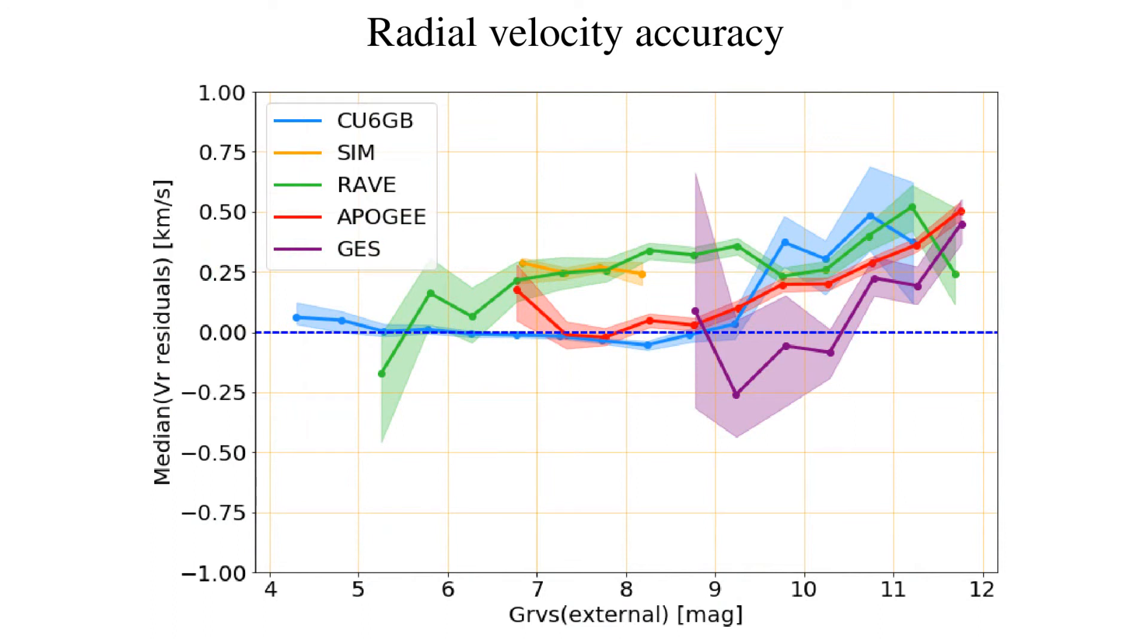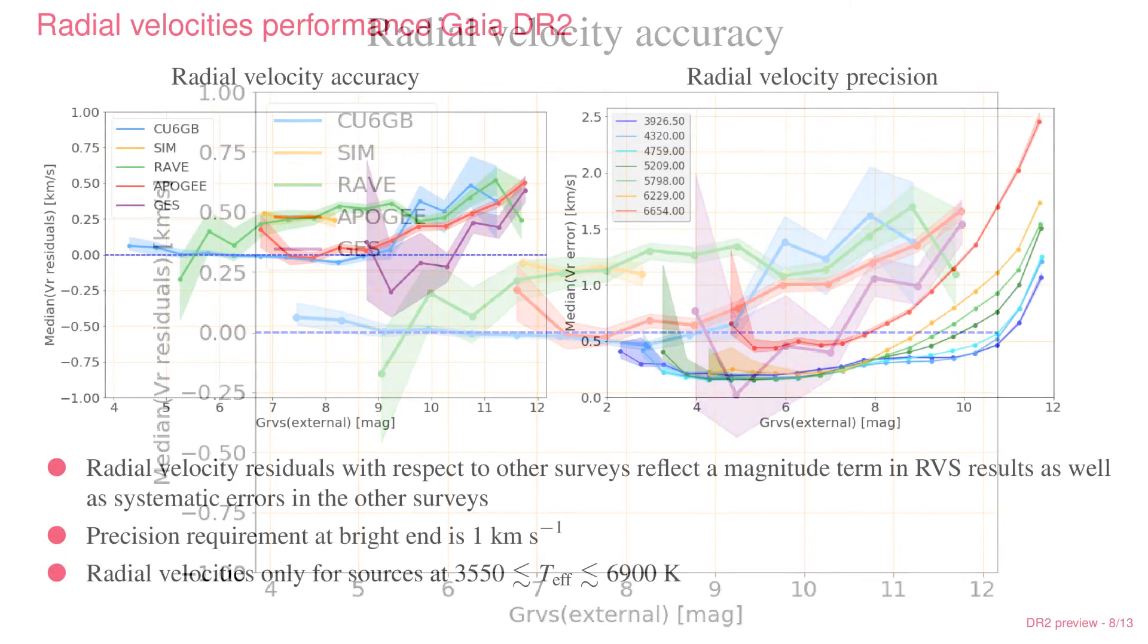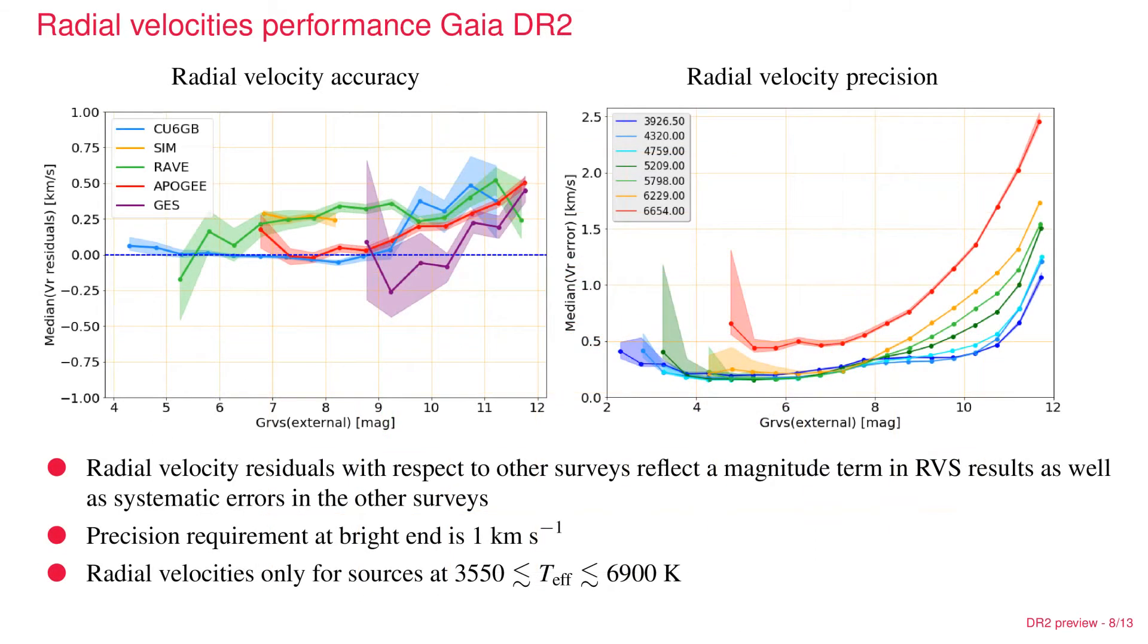This could be indicative of problems in either our survey or the ground-based surveys. But the fact that you see a consistent trend could hint at a first sign that the effect of radiation damage is starting to kick in at the fainter magnitudes in RVS. We're still investigating this, but the bottom line is that by and large the agreement between RVS radial velocities and those from other surveys is very good.